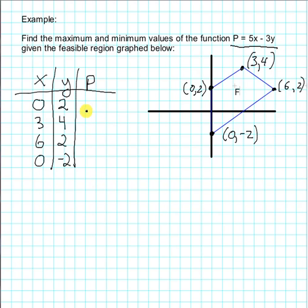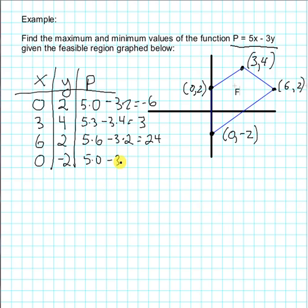So now we can calculate P by substituting in. So here we have 5 times 0 minus 3 times 2, we get -6. Here we have 5 times 3 minus 3 times 4, that's 15 minus 12, we get 3. Here we have 5 times 6 minus 3 times 2, 30 minus 6 is 24. And finally, 5 times 0 minus 3 times -2 is a positive 6.